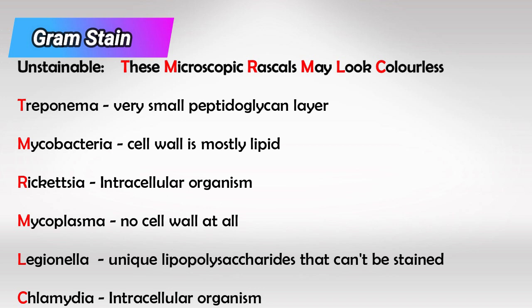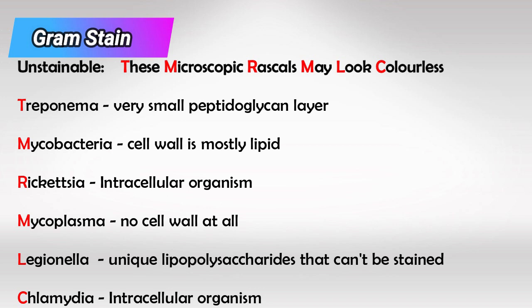However, some organisms cannot be stained using Gram stain — if you use Gram stain on them, you're not going to see anything. To memorize them, remember this mnemonic: 'These Microscopic Rascals May Look Colorless.' The best way to memorize is to understand: Treponemas have a very small peptidoglycan layer; Mycobacteria have mostly lipid cell walls; Rickettsia is mostly intracellular; Mycoplasma has no cell wall; Legionella has a unique peptidoglycan layer; and Chlamydia is mostly intracellular as well.